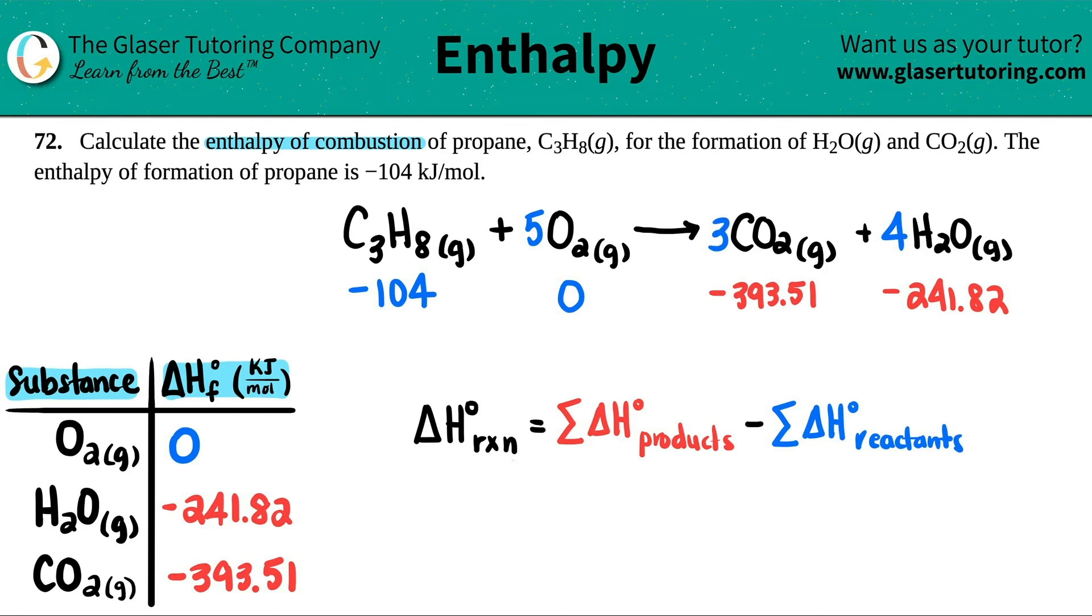How do I get that? The first thing we're going to do is we're going to take all the delta H values that we found out, and we're going to multiply it by how many we have in our balanced equation. For example, for C3H8, I didn't see a number here. That means there was only one C3H8. So I'm just going to multiply negative 104 by one. There was five O2s, so I'm going to multiply zero times five. There was three CO2s, so I'm going to multiply that by three. And there was four H2Os. I'm going to multiply the negative 241.82 times four.